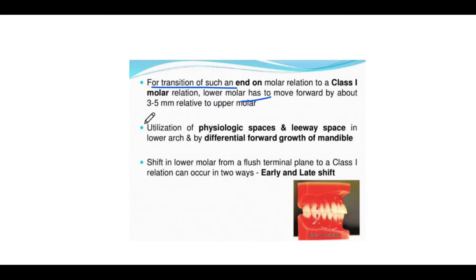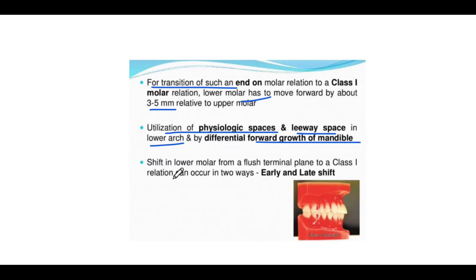For this transition, the lower molar has to move forward by about 3 to 5 mm relative to the upper molar. This is achieved by utilization of physiologic spaces and leeway space in the lower arch, and by differential forward growth of the mandible.